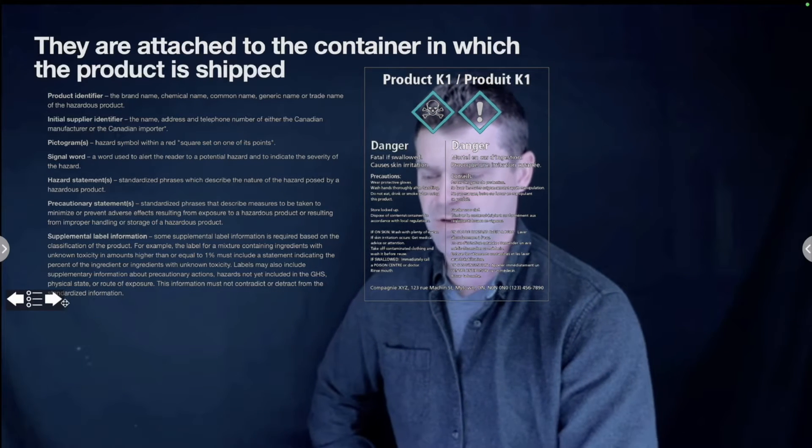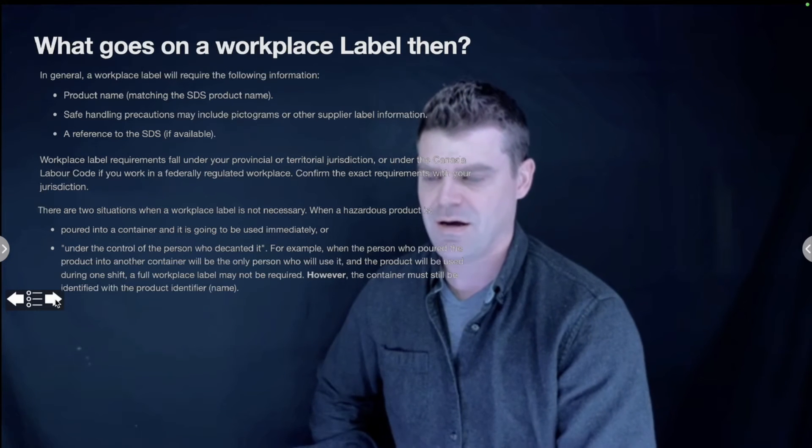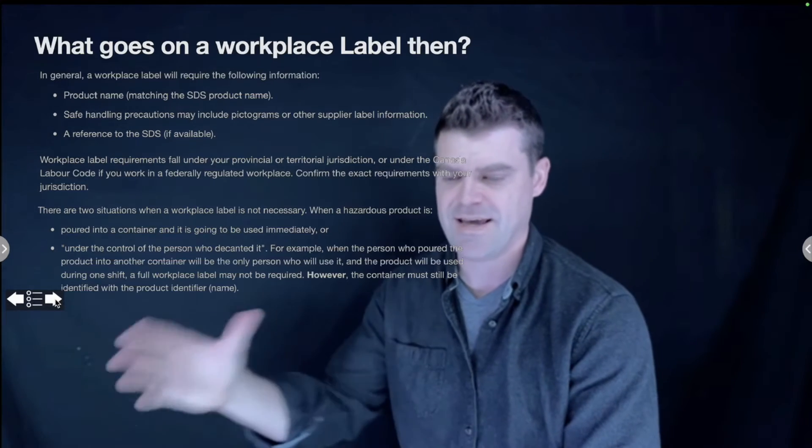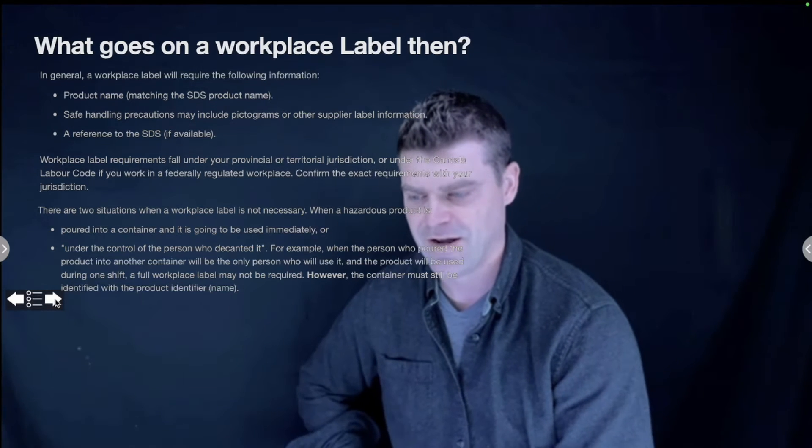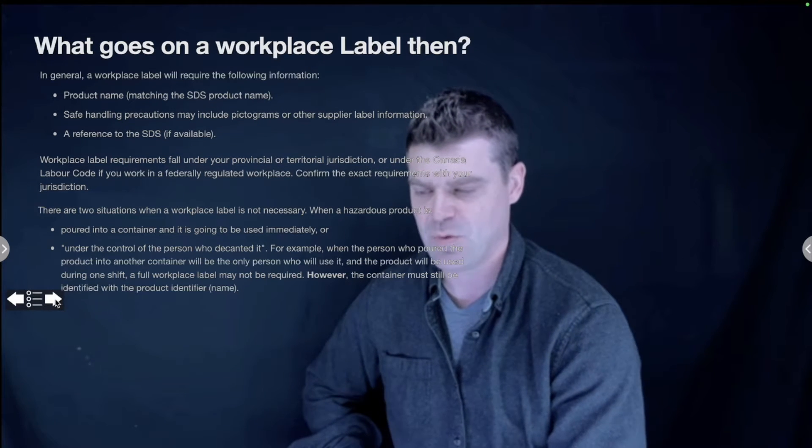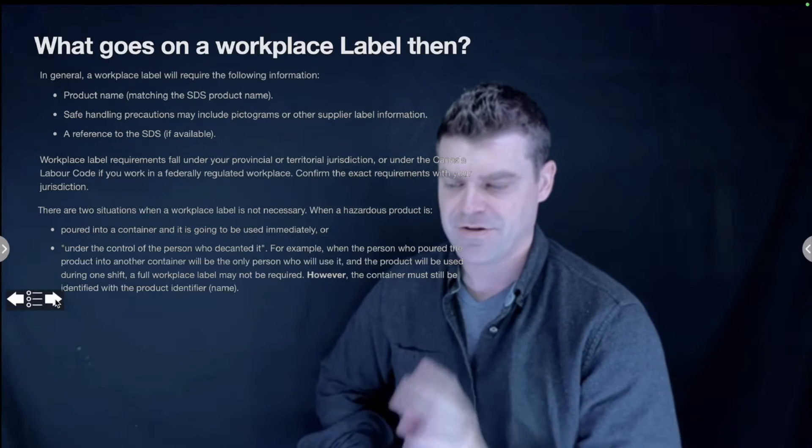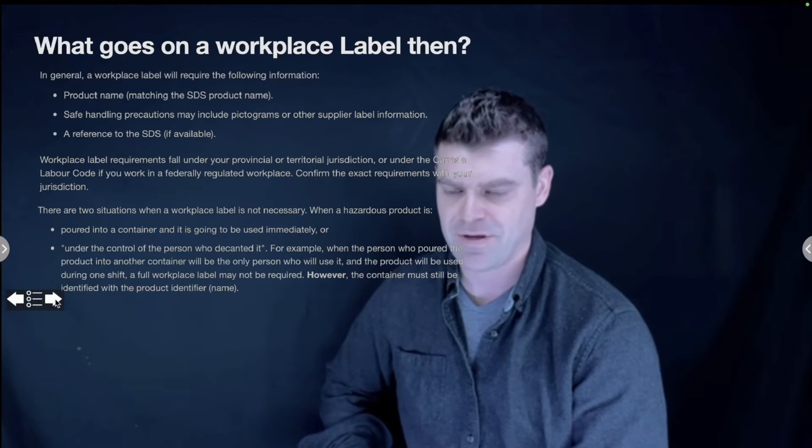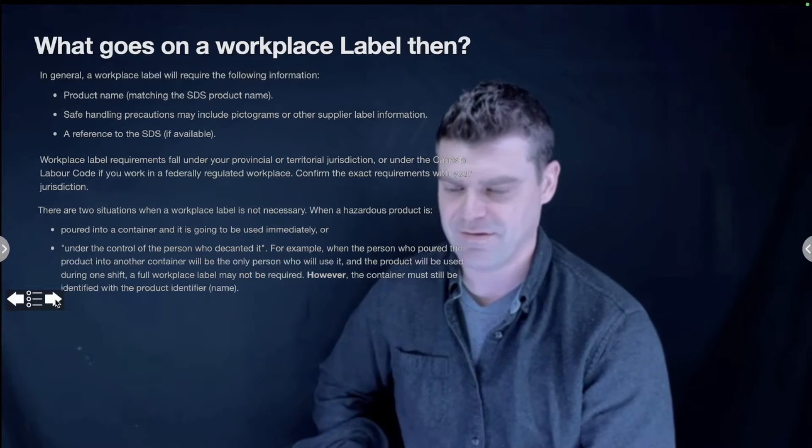While we're talking about SDS labels, let's talk about what goes on a workplace label. If you take it from a large container and put it in a smaller container, you need to apply a workplace label. In general, a workplace label will have the product name, safe handling precautions, and a reference to the SDS. There's two situations where you do not need those: one is if it's poured into a container and it's all going to be used up immediately, and the other is if it's under control of the person who decanted it and you know you're going to use it by the end of your shift.